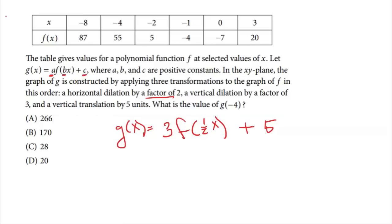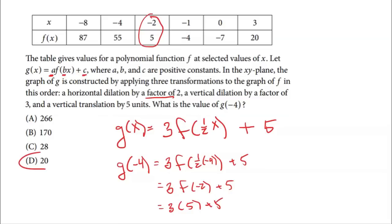So now we just have to utilize what we just learned because they want us to figure out what is g(-4). Now that I was able to write my function with those transformations, all I got to do is plug in negative 4. So I get 3 times f(1/2 times -4) + 5. I start on the inside. One-half times negative 4 is negative 2. So I have 3f(-2) + 5. Now I use my table to figure out what is f(-2). That's right here. f(-2) = 5. So I have 3 times 5 + 5, and 3 times 5 is 15. 15 plus 5 is 20. So the final answer is D, 20.